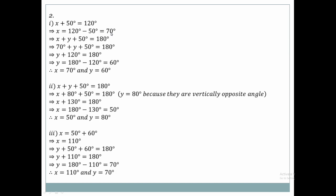Using the angle sum property: X plus Y plus 50 equals 180. X is 70. So 70 plus Y plus 50 equals 180 degrees, therefore Y equals 60 degrees.